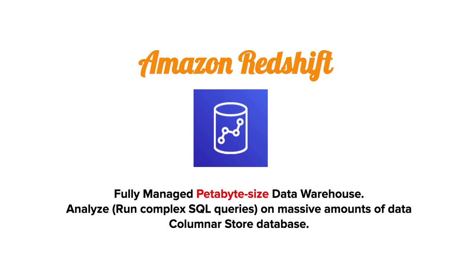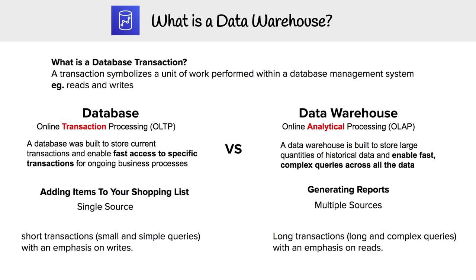Amazon Redshift is a columnar store database. To really understand what Redshift is, we need to understand what a data warehouse is, and to do that it's good to compare it against a database. To understand this, we need to set some foundational knowledge and understand what a database transaction is. A transaction symbolizes a unit of work performed within a database management system.